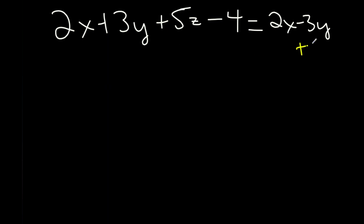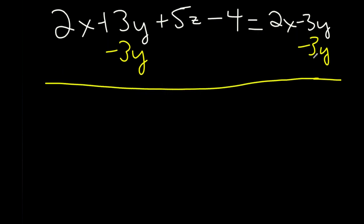So we want to isolate for y. So my first step is going to be to add 3y to both sides. Actually, let's not do that. Let's not make it on the left side. Let's do one on the right side, just to show it off, because I usually keep mine on the left side, but I'll do it on the right side right now.